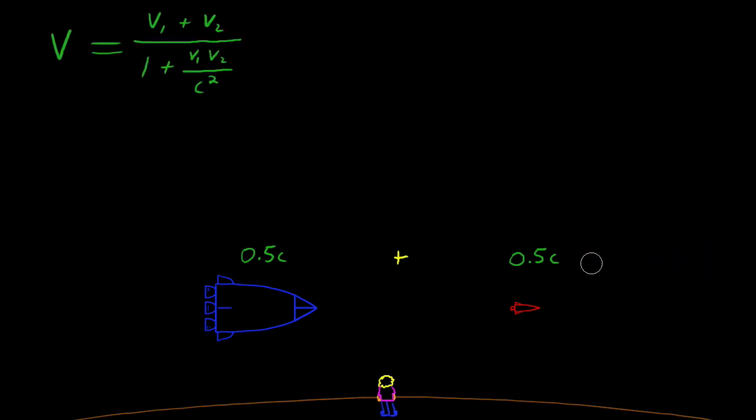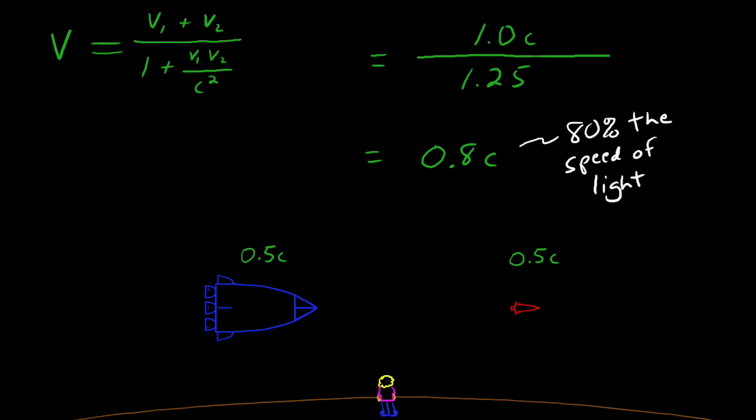So instead, you have this. 0.5C plus 0.5C divided by 1 plus that would be 0.25C squared divided by C squared. That would be C divided by 1.25 equals 0.8, 80% of the speed of light. So from your perspective on the planet, you see the missile moving at 0.8C.